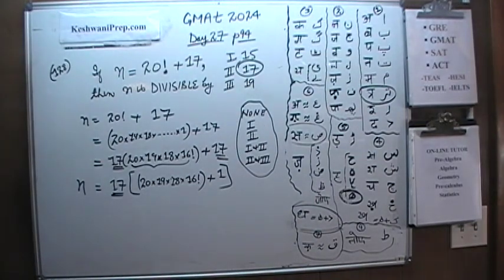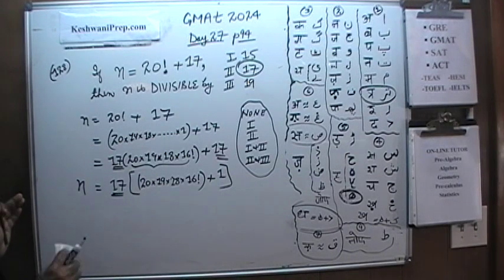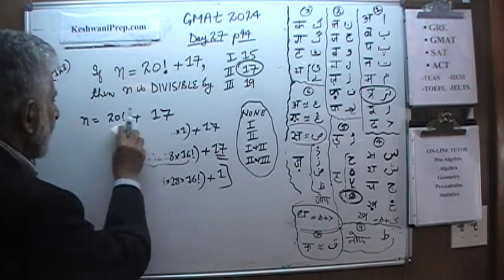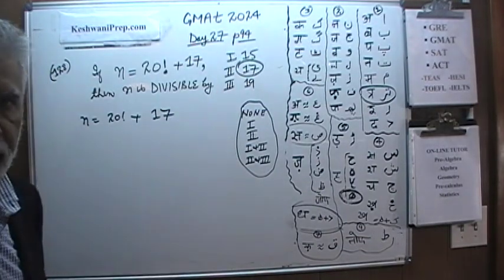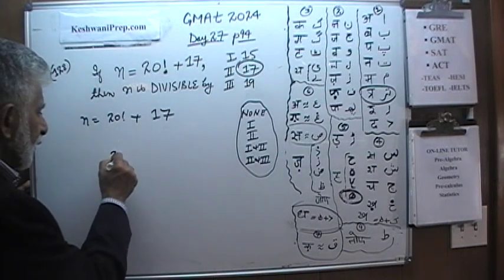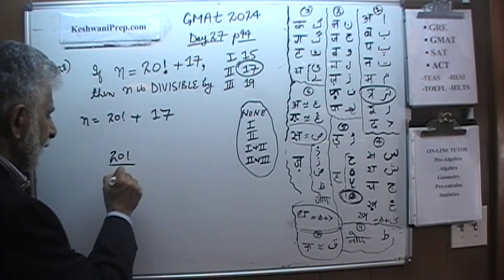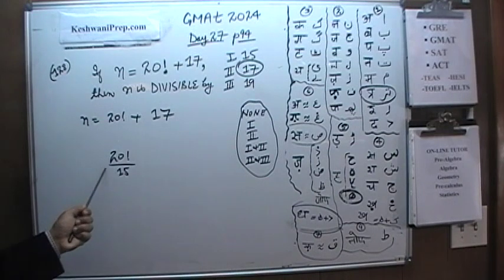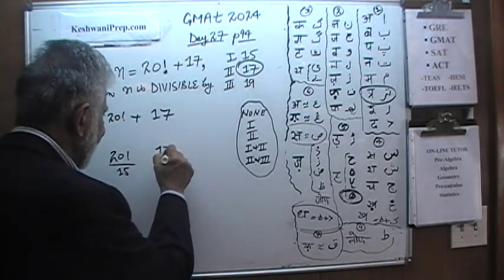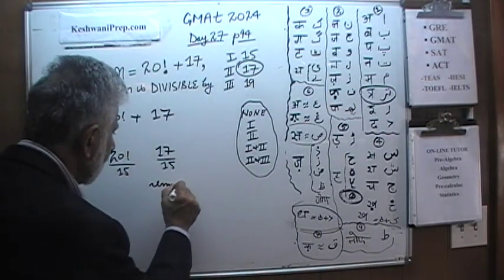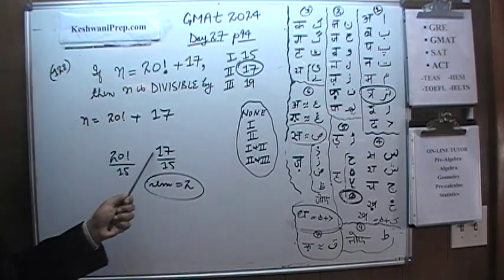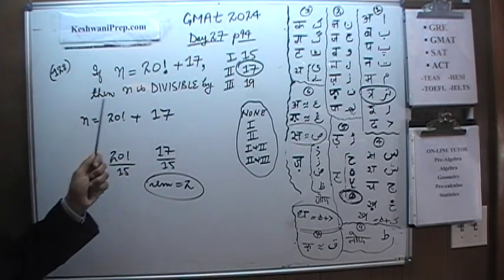What about 15 and 19? If you were to try to divide this quantity by 15, 20 factorial will go nicely into 15 because there is a 15 in it — it will divide evenly. But when you try to divide 17 by 15, we will have a remainder of 2, because 15 goes into 17 one time with a remainder of 2. This quantity does not divide evenly into 15.